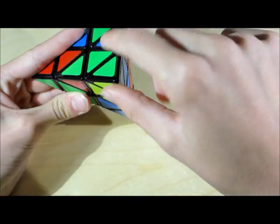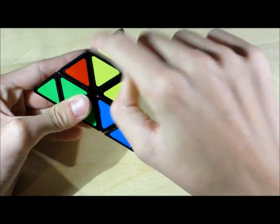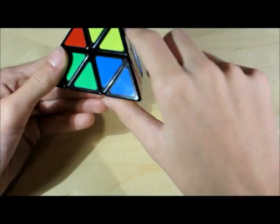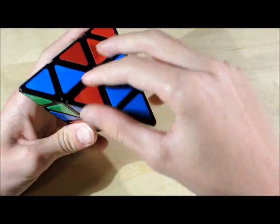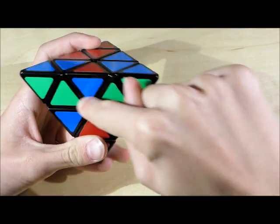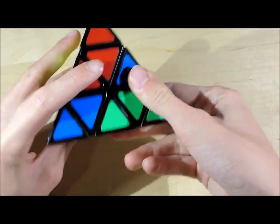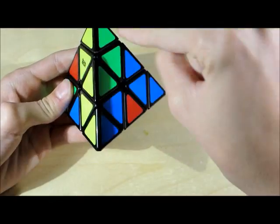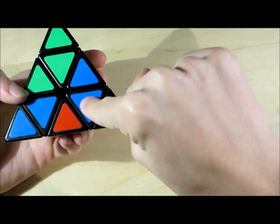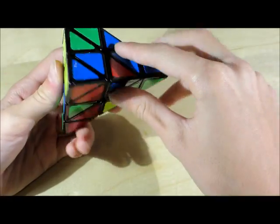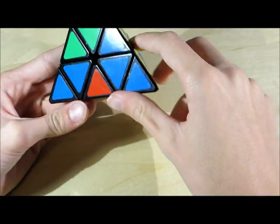Now the next step is we're going to be solving these centers right here. All you got to do to solve these is twist them to line up with each other. So we want to be looking for this right here, to get two lined up. So you want to choose a color. I'll choose blue.